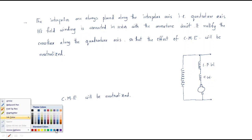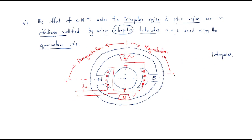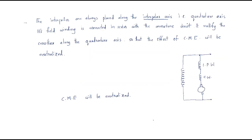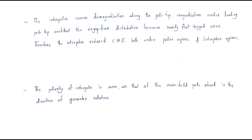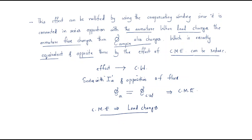The interpoles are always placed along the interpolar axis. This is the polar axis, and the interpoles are connected across this axis, which is known as the interpolar axis — also called the quadrature axis. The direct axis is the other axis, and the interpolar axis is named the quadrature axis.